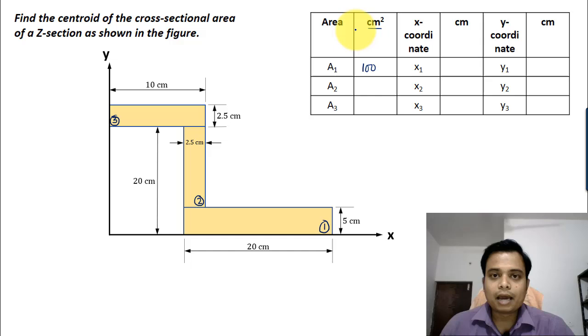20 cross 5 is pretty simple, that's 100. Note that the dimensions is always in centimeters. If it's area, it's centimeter square, and if it's linear dimension, it's centimeters.